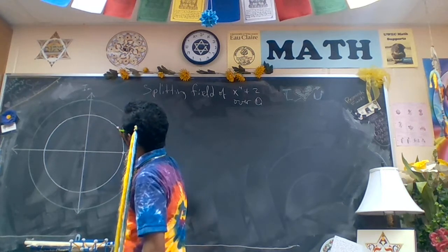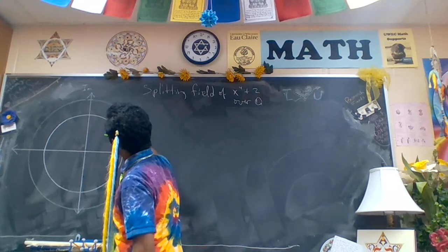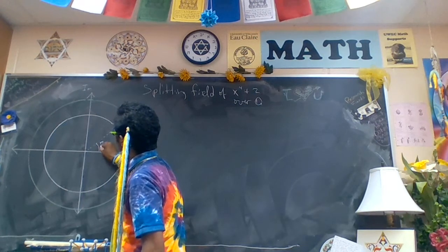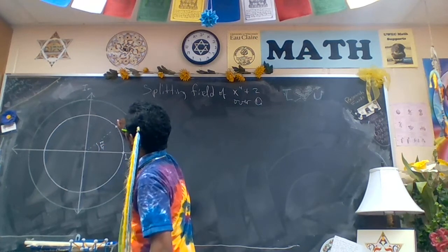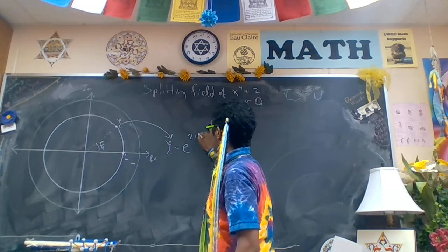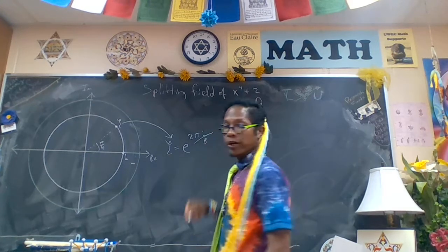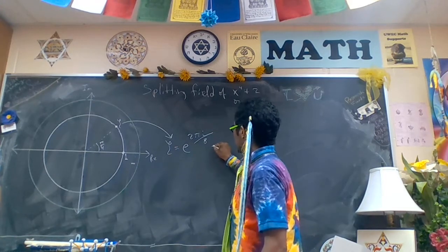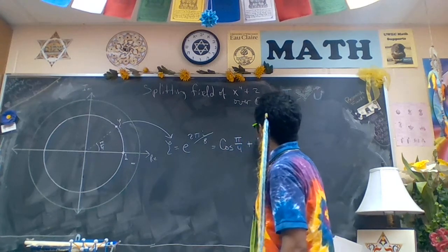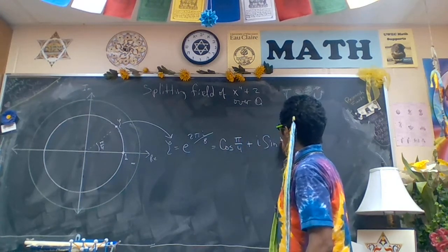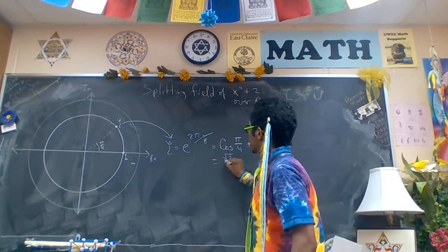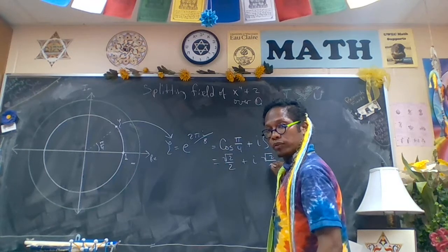So the first eighth root of unity will be roughly here at pi over 4 radians. And this we're going to call zeta. And note that zeta is equal to e to the 2 pi i over 8, which is cosine of pi over 4 plus i sine pi over 4, which is root 2 over 2 plus i root 2 over 2.